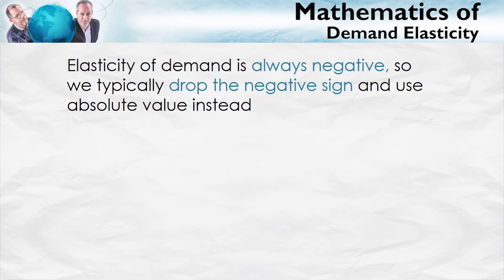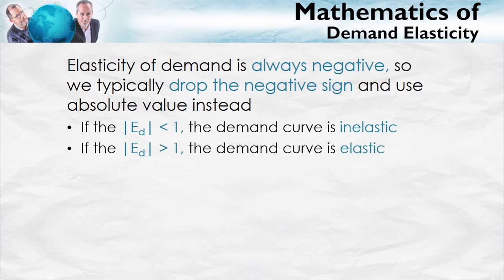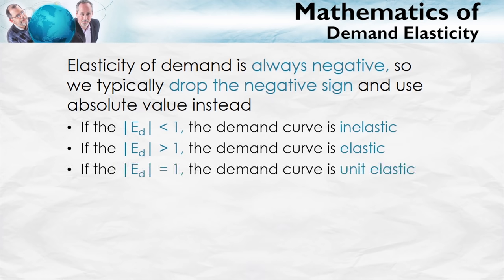Here's some important notation. If the absolute value of the elasticity of demand is less than 1 — just like the example we just gave for oil — we say that the demand curve is inelastic. If the elasticity of demand is greater than 1, we say the demand curve is elastic. And if the elasticity of demand is equal to 1, that is the knife-point case, then the demand curve is unit elastic. These terms are going to come back, so keep them in mind: inelastic less than 1, elastic greater than 1.